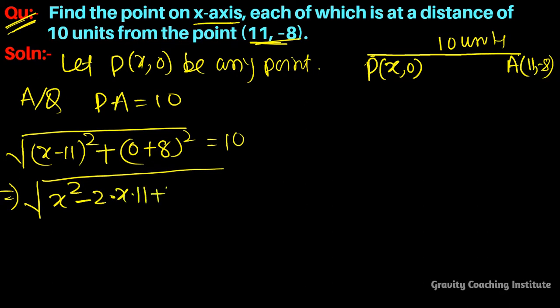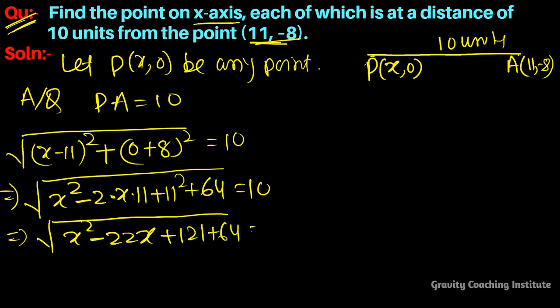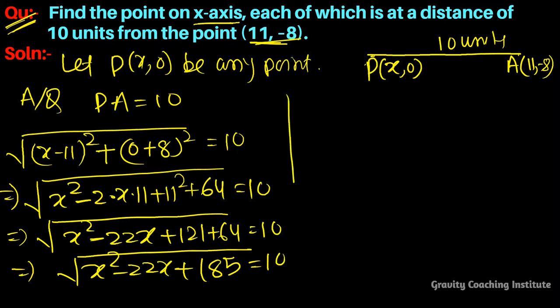So √[x² - 22x + 121 + 64] = 10, which simplifies to √[x² - 22x + 185] = 10. Now we'll square both sides.